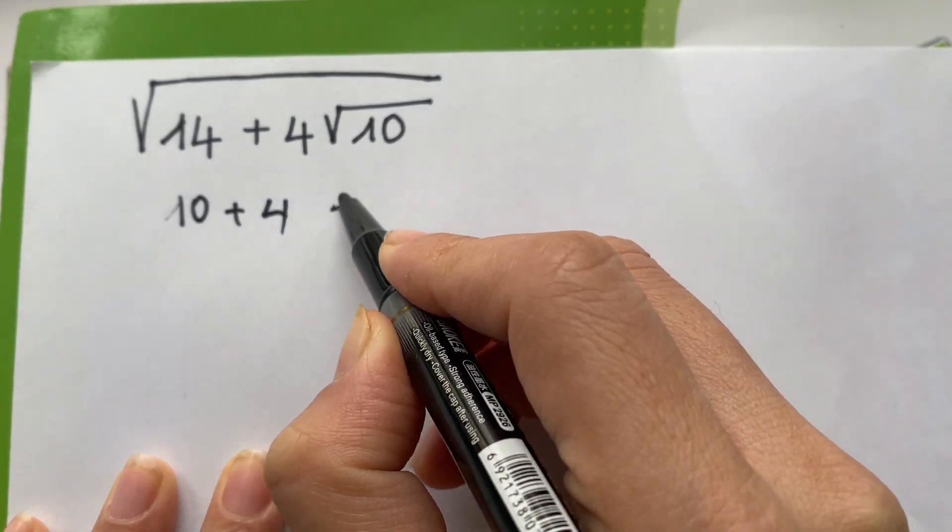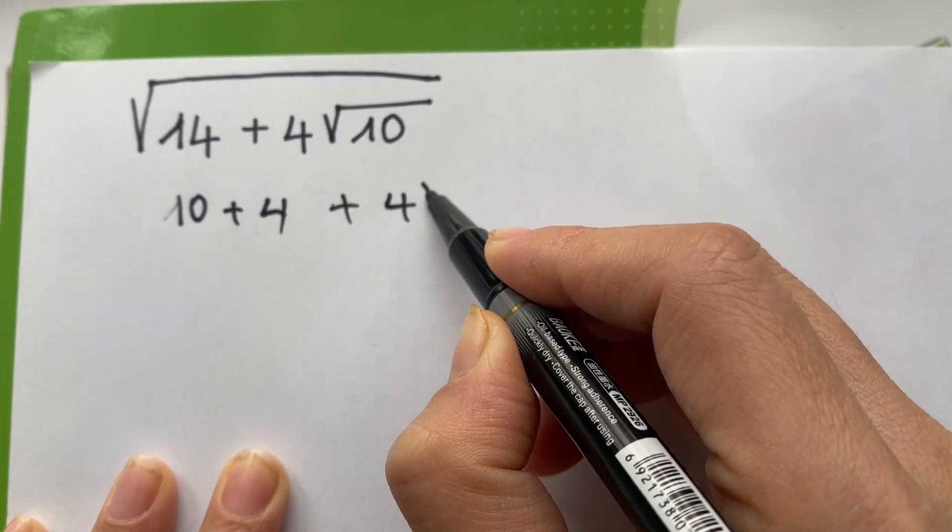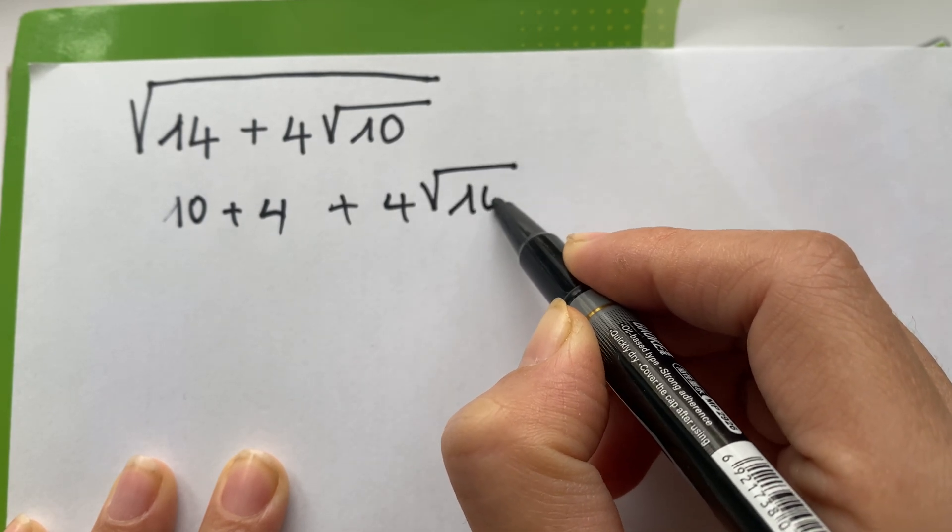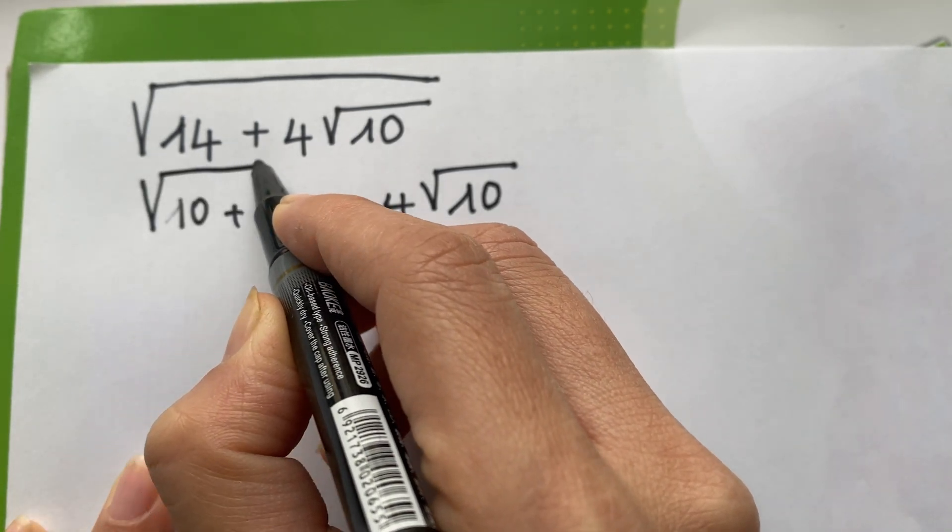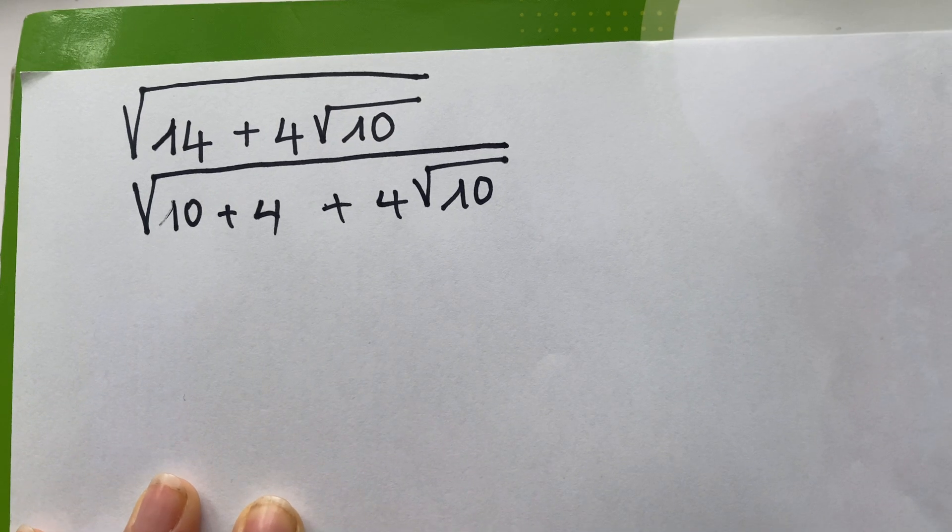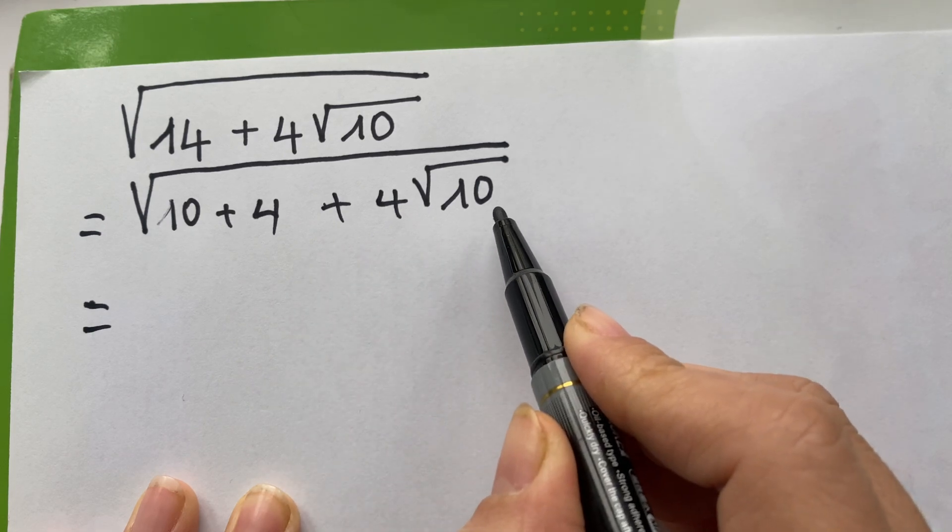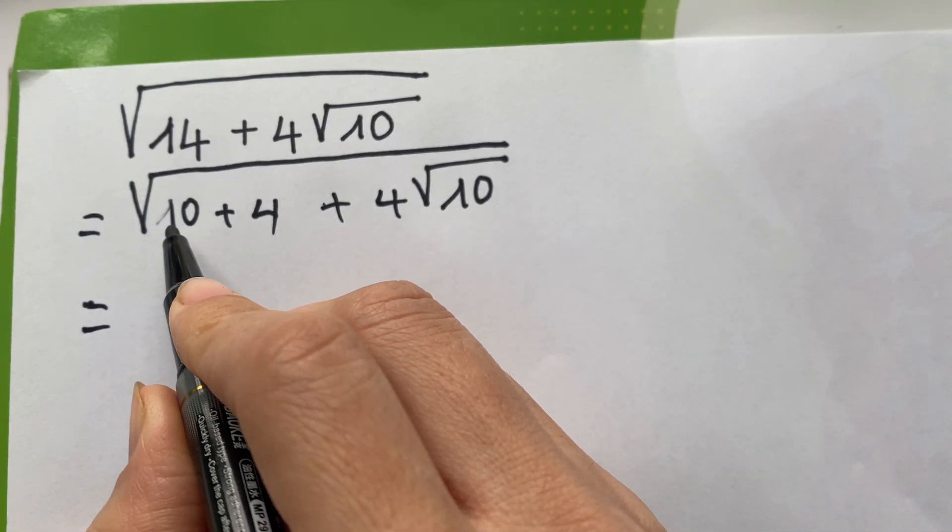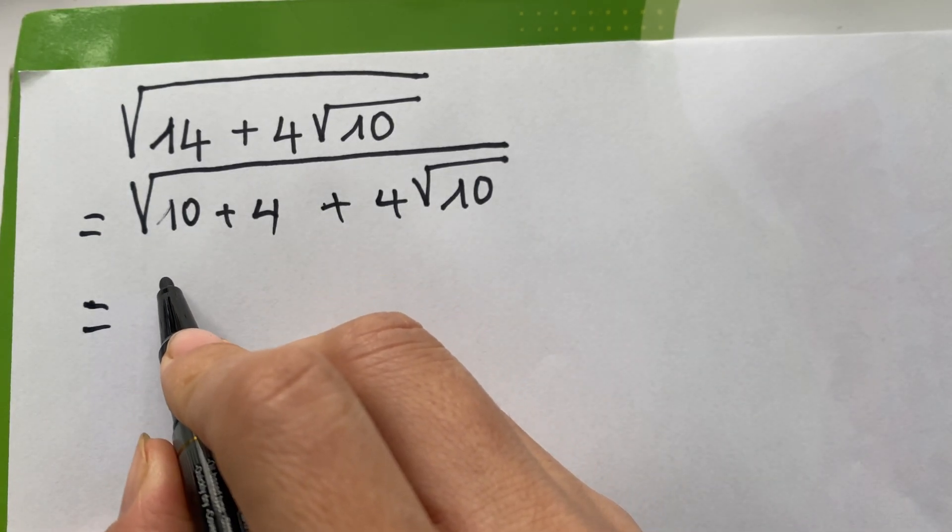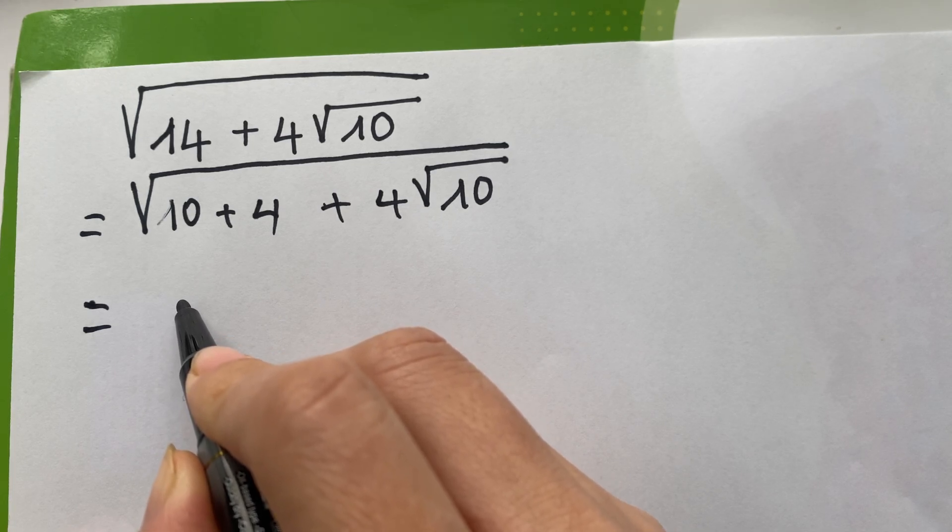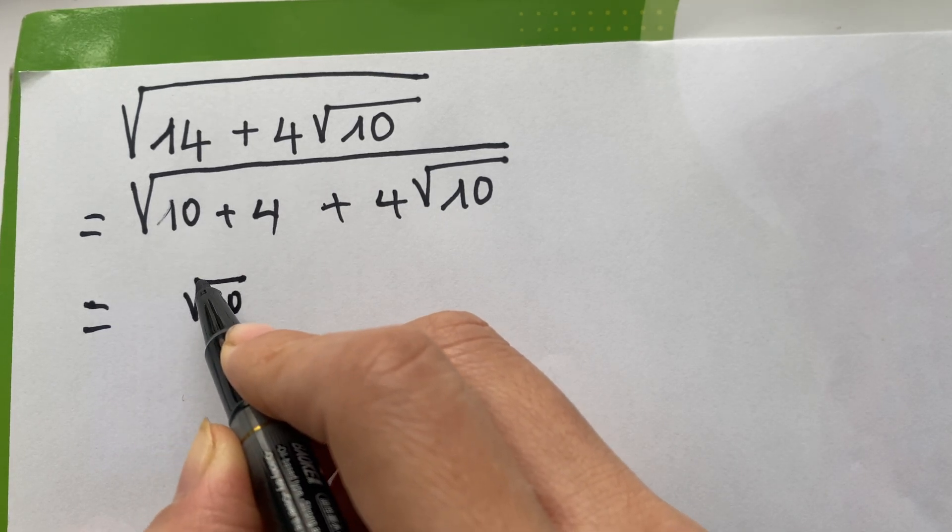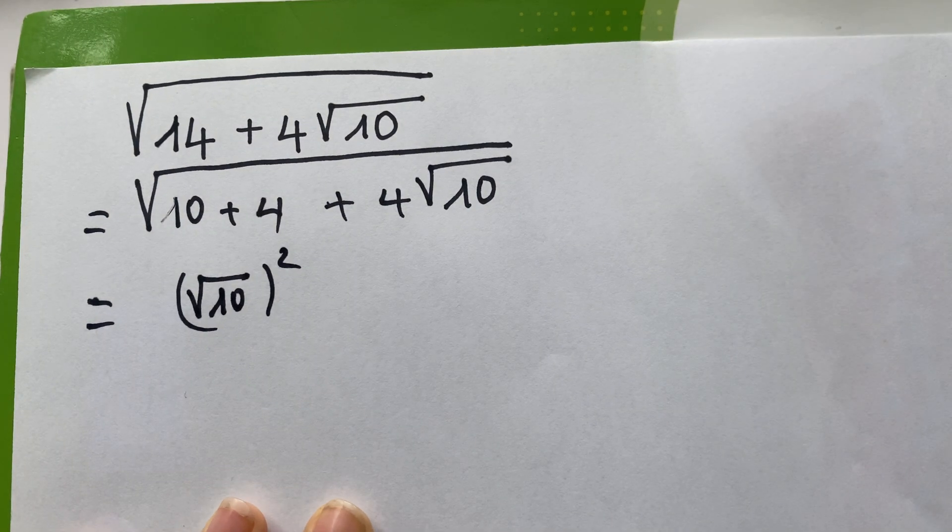And plus 4 times square root of 10. You see 10, you can see square root of 10. You can see 10 is the same as square root of 10 bracket square.